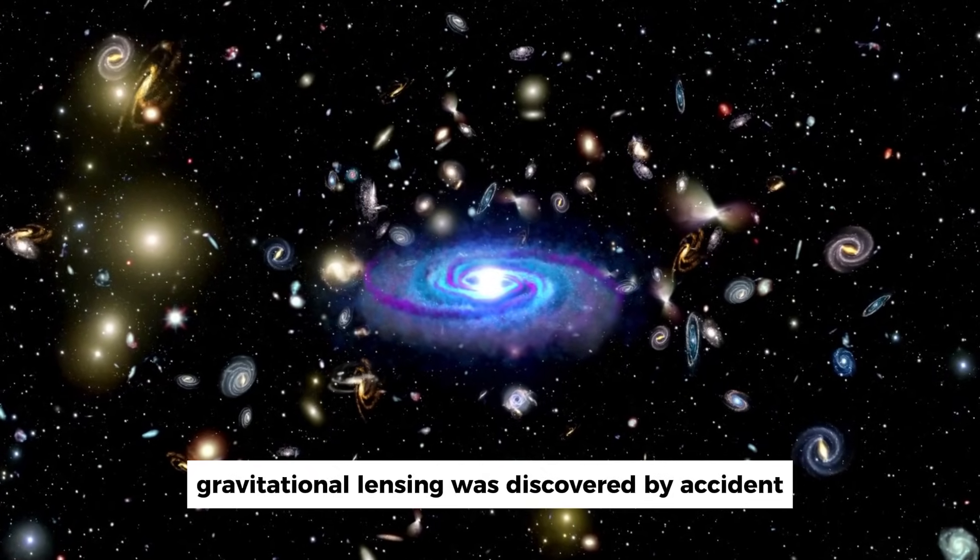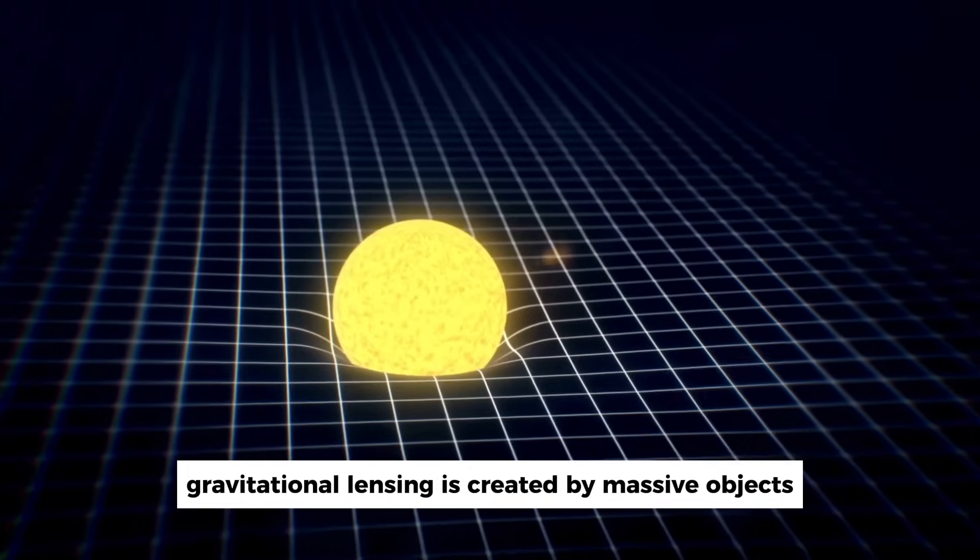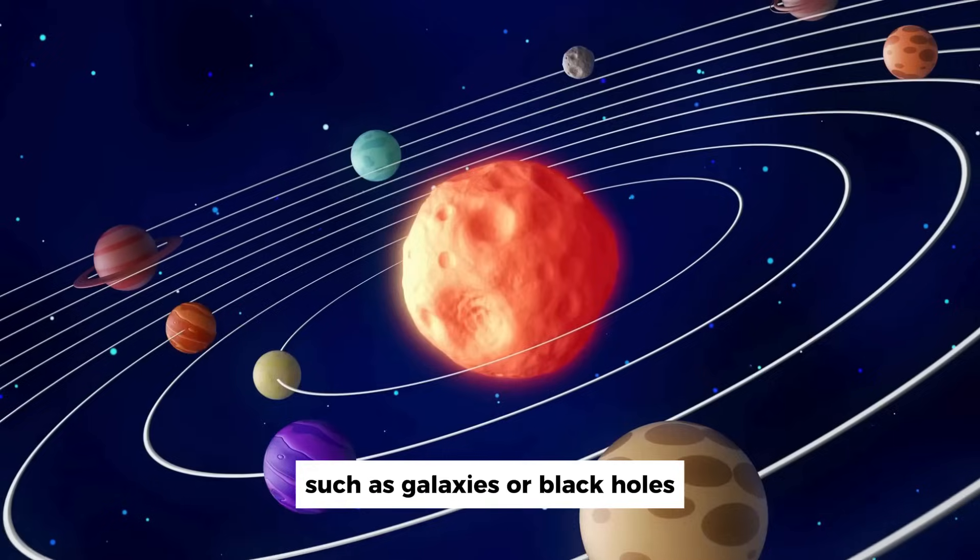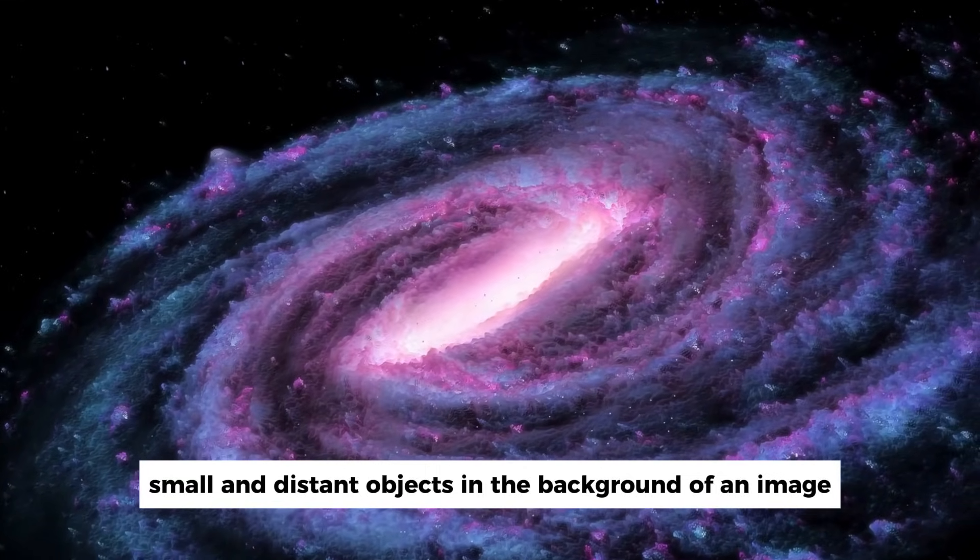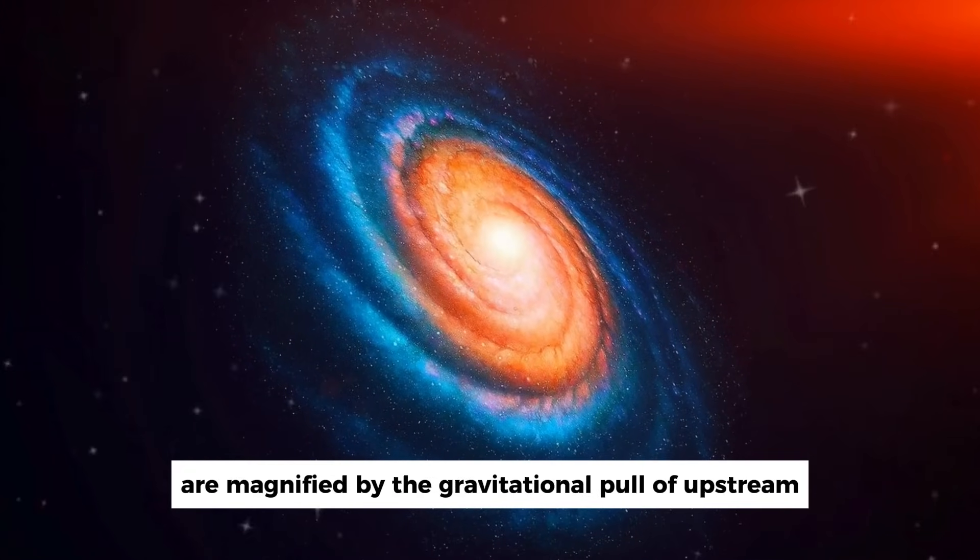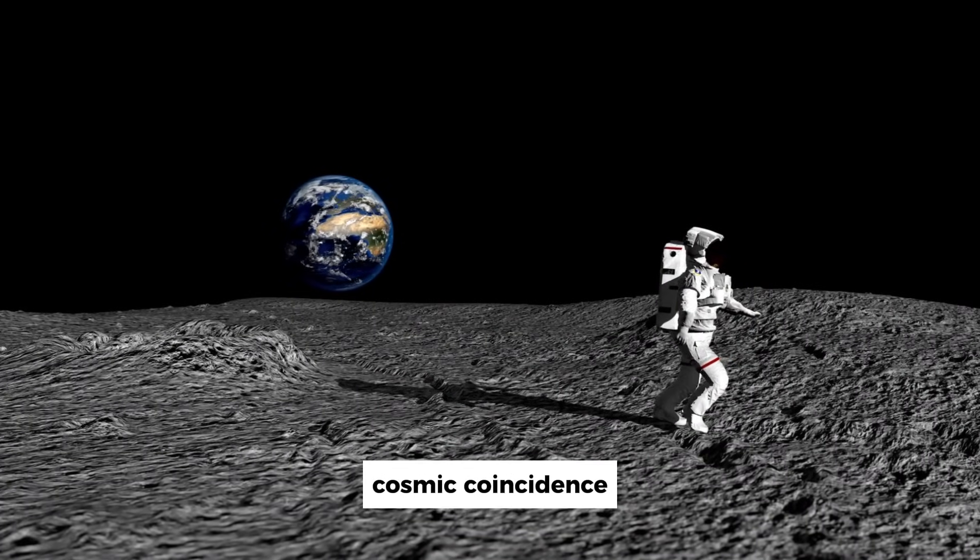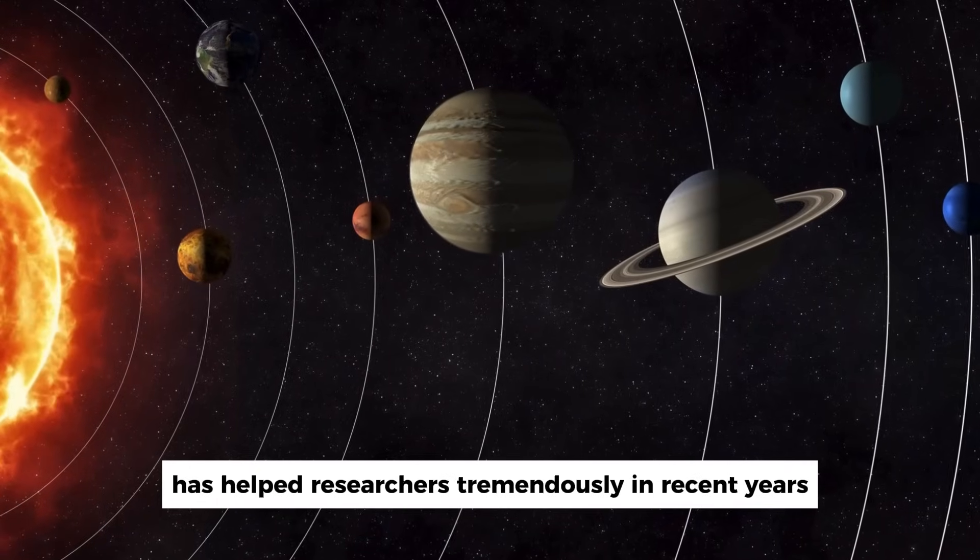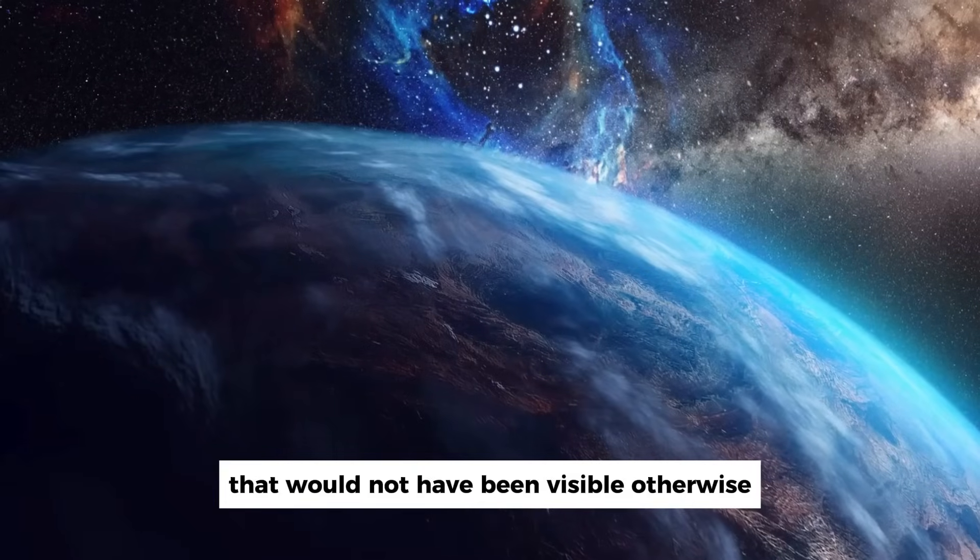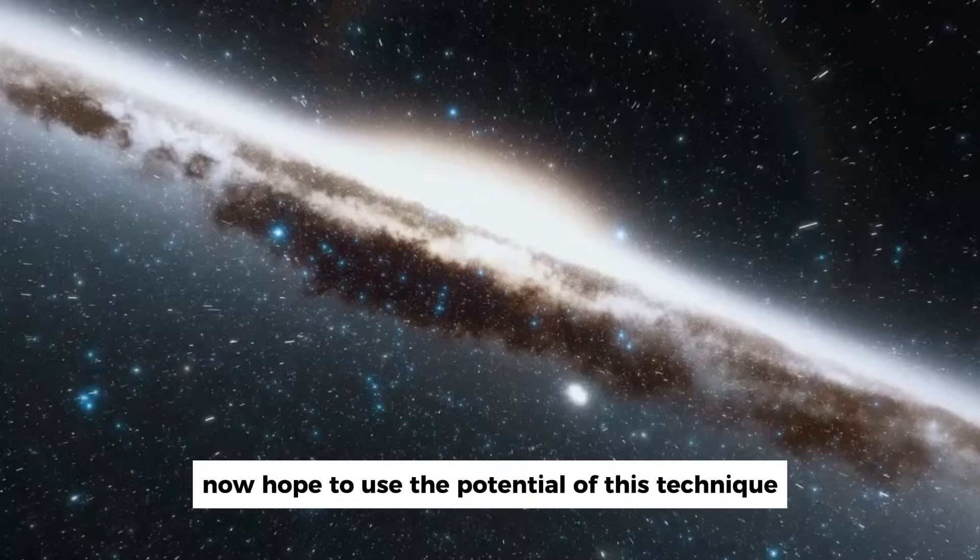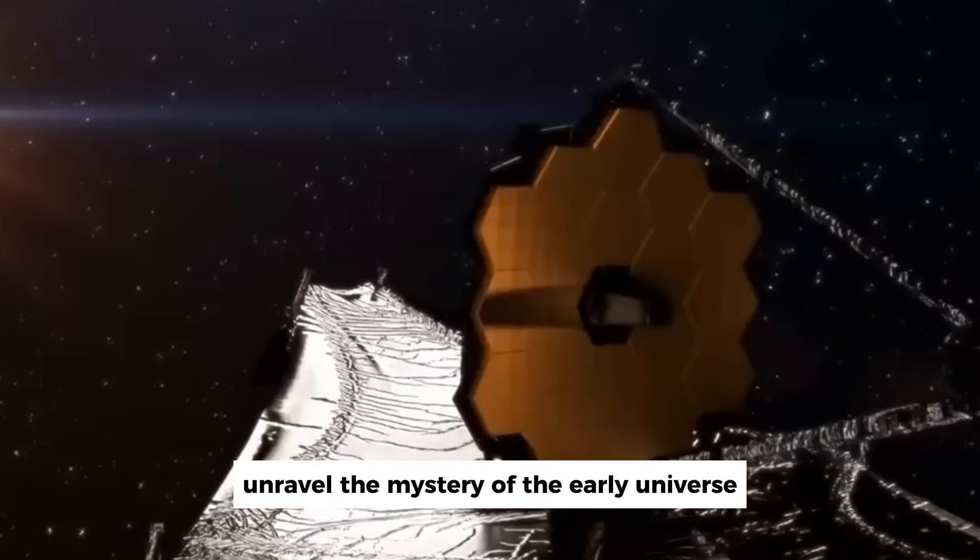Gravitational lensing was discovered by accident when scientists noticed strange distortions in images. Gravitational lensing is created by massive objects such as galaxies or black holes. Small and distant objects in the background of an image are magnified by the gravitational pull of upstream very heavy objects. This simple yet powerful cosmic coincidence has helped researchers tremendously in recent years to identify distant galaxies and exoplanets that would not have been visible otherwise. Researchers now hope to use the potential of this technique to look further and further back in time and finally unravel the mystery of the early universe.